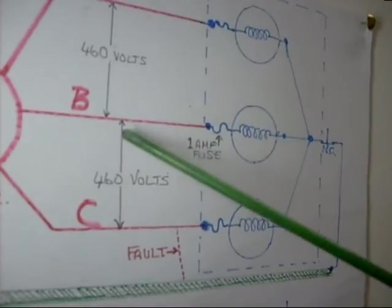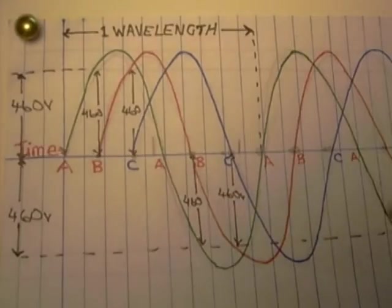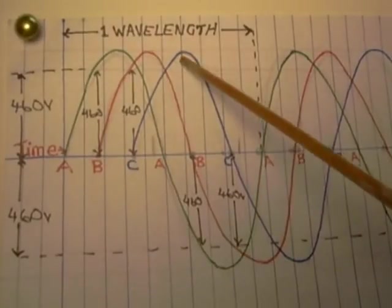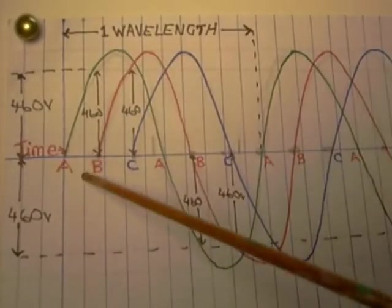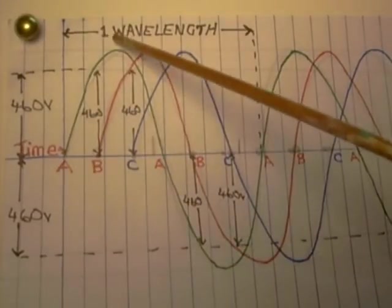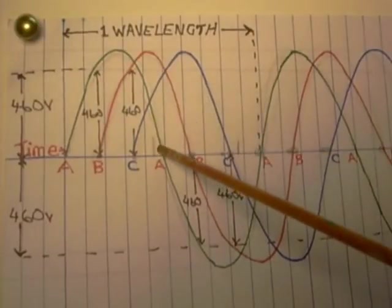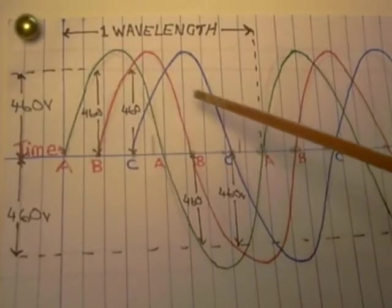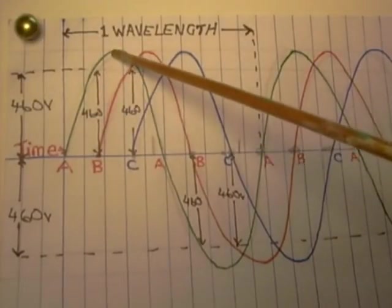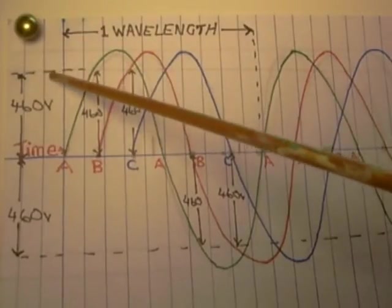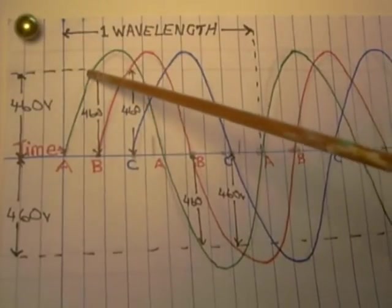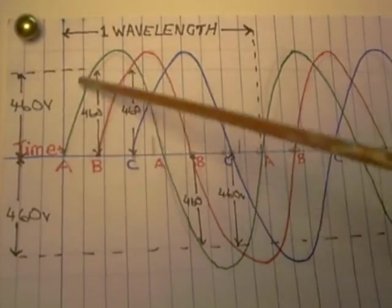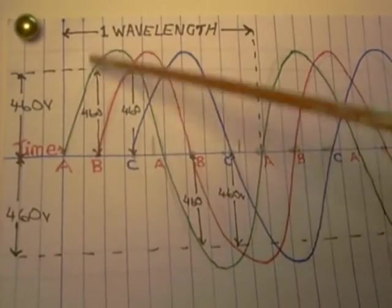And these. Are all out of phase. With each other. This is a representation of the electricity that comes from the alternator. The electricity starts at zero. It rises to about 500 volts. Then comes back to zero. Then goes negative 500 volts. And comes back to zero. But as you can see. Even though it goes up to 500 volts. The usable electricity is about 460 volts. And your voltmeter is designed to measure that particular distance. Not this distance.